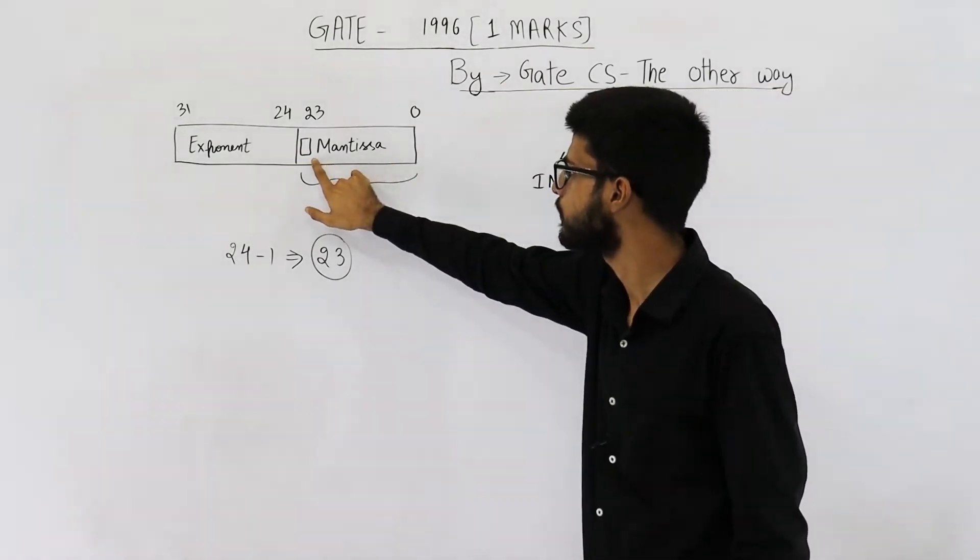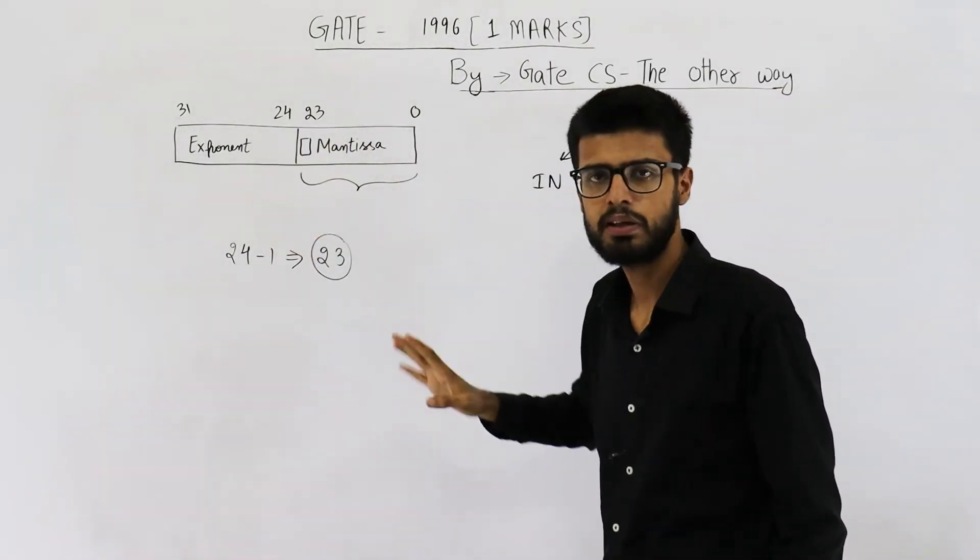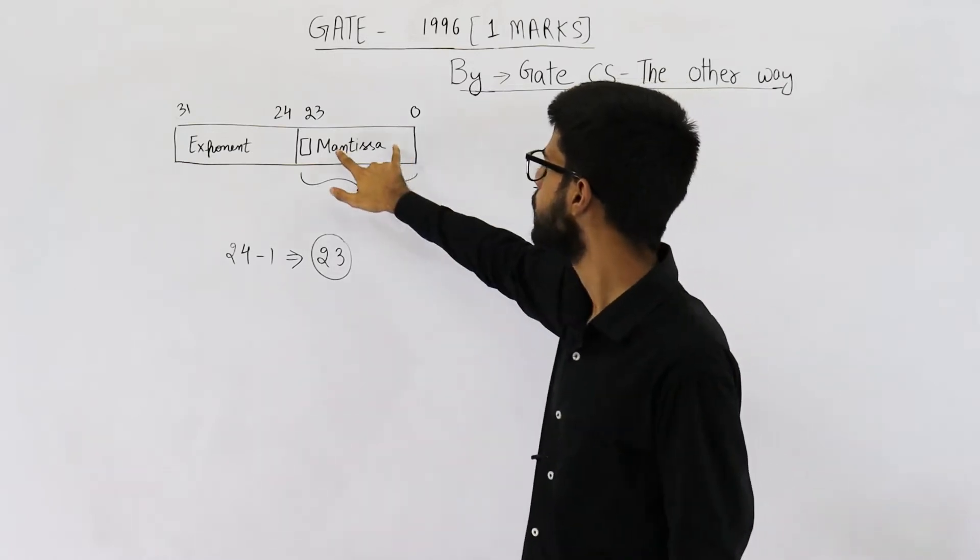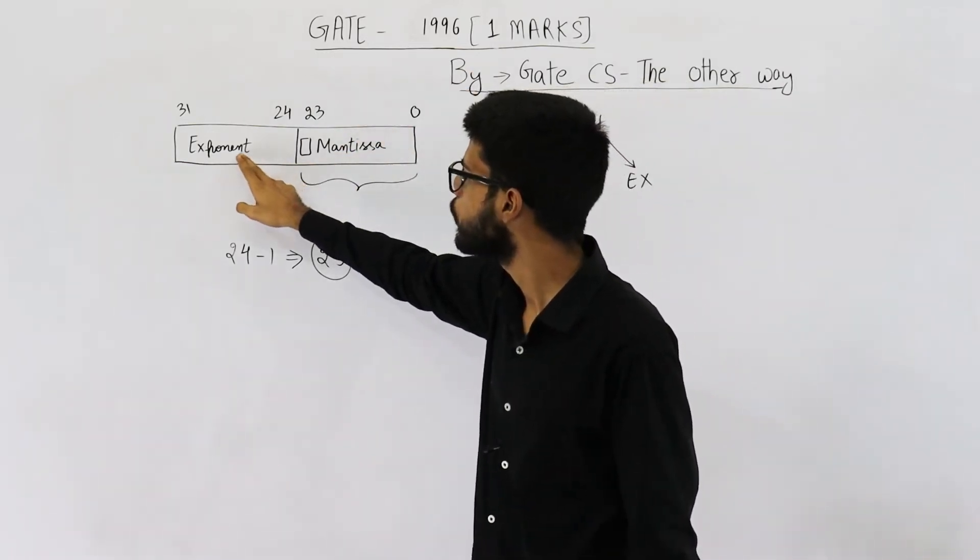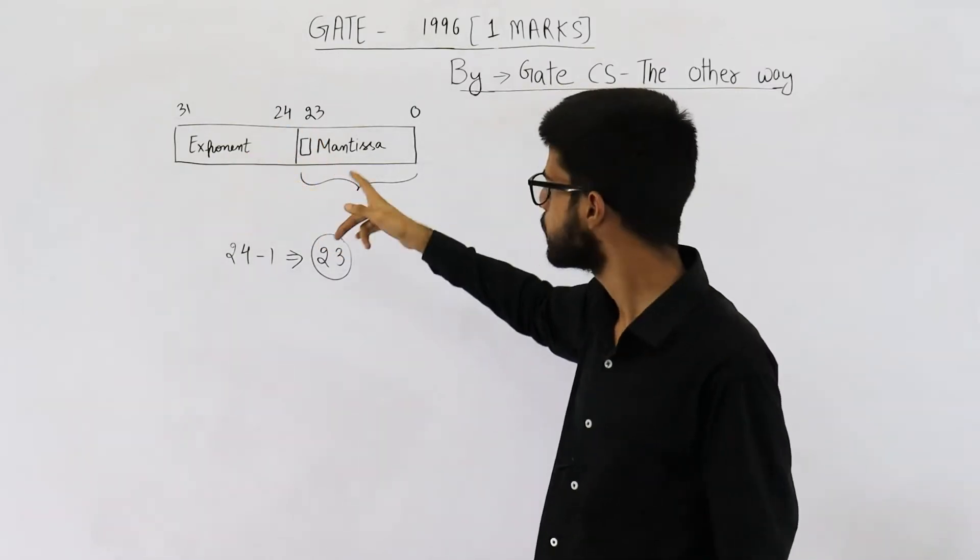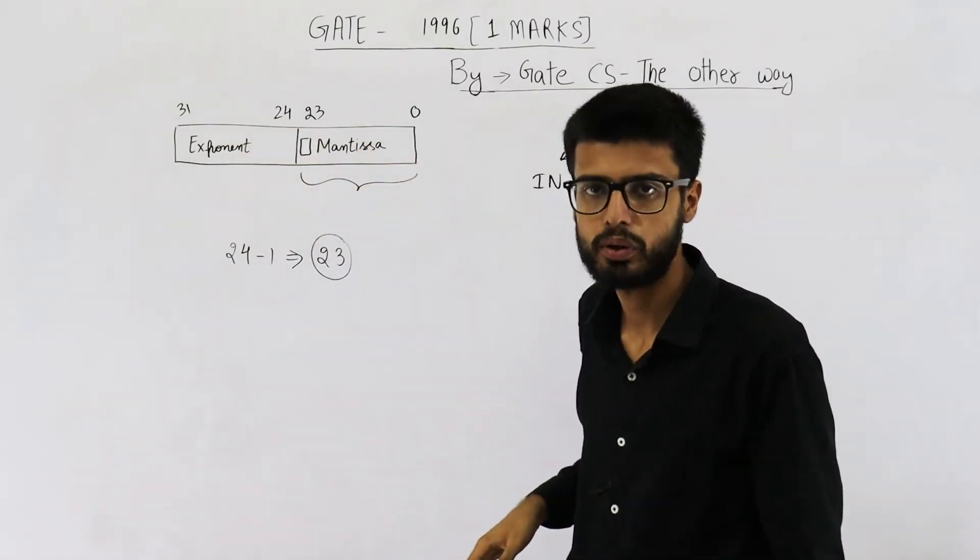See, if mantissa has a negative sign, this number will become negative. If mantissa has some magnitude, that magnitude into 2 raised to the power exponent means that magnitude is the magnitude of number also.